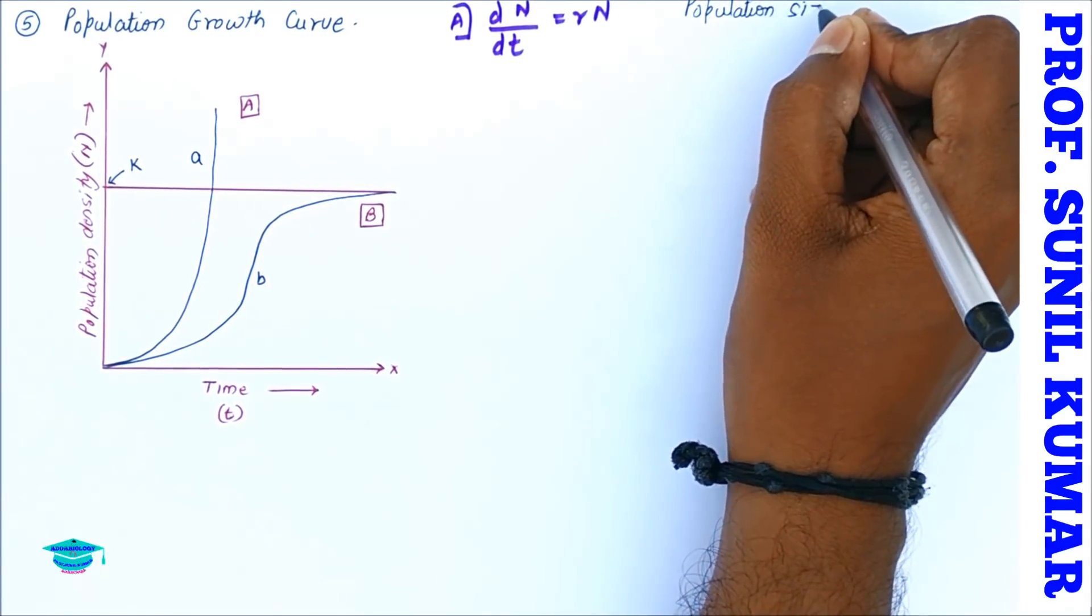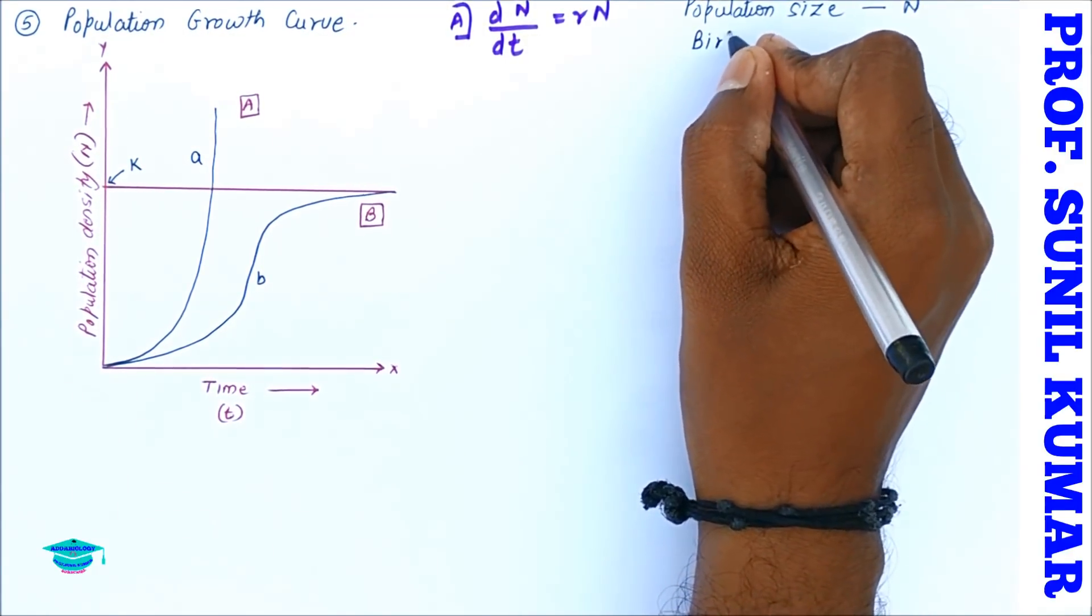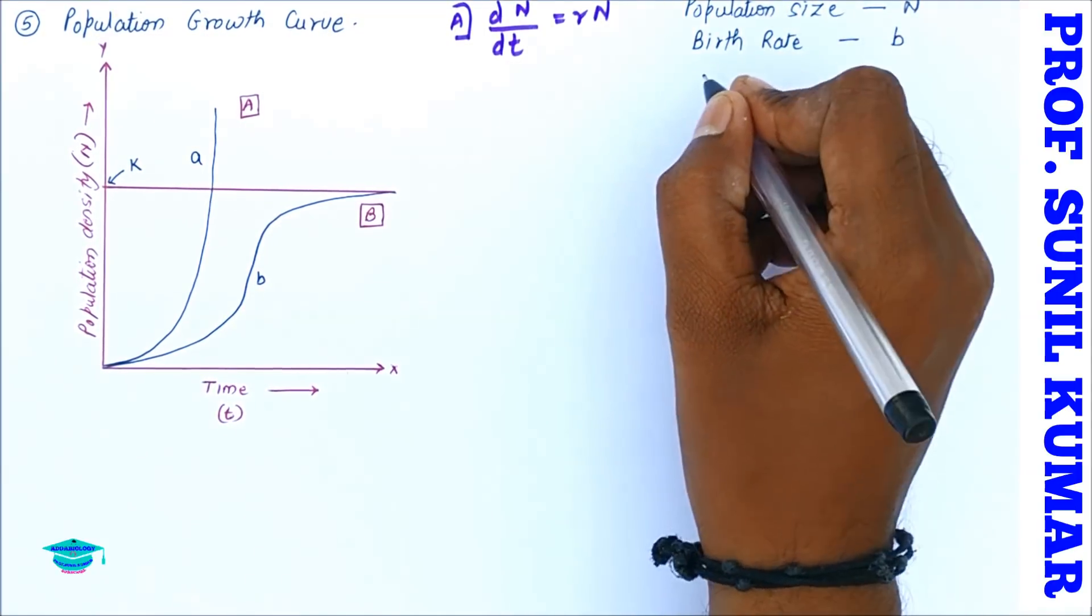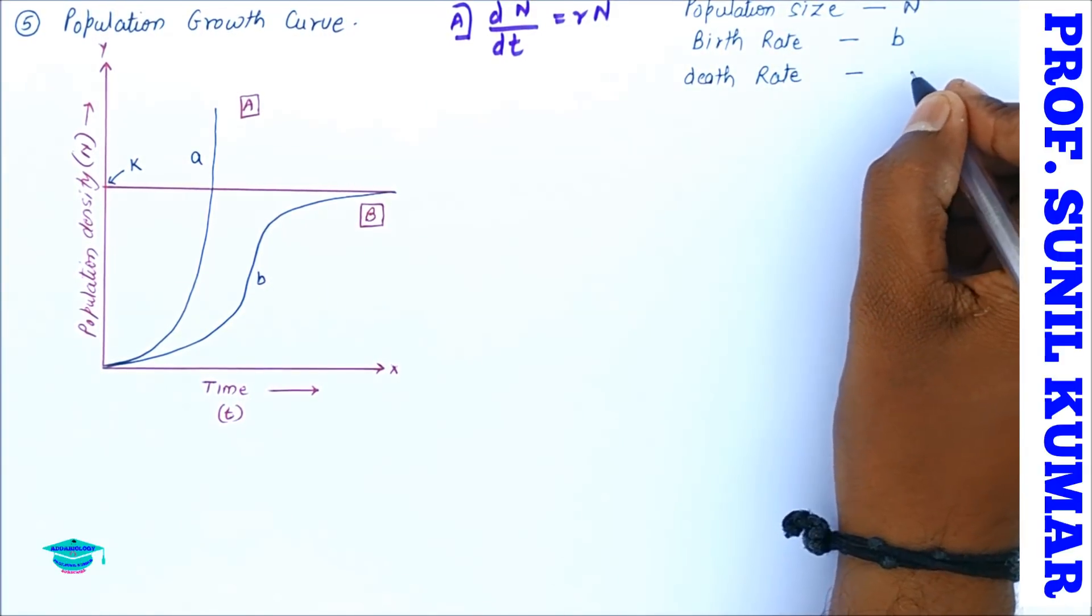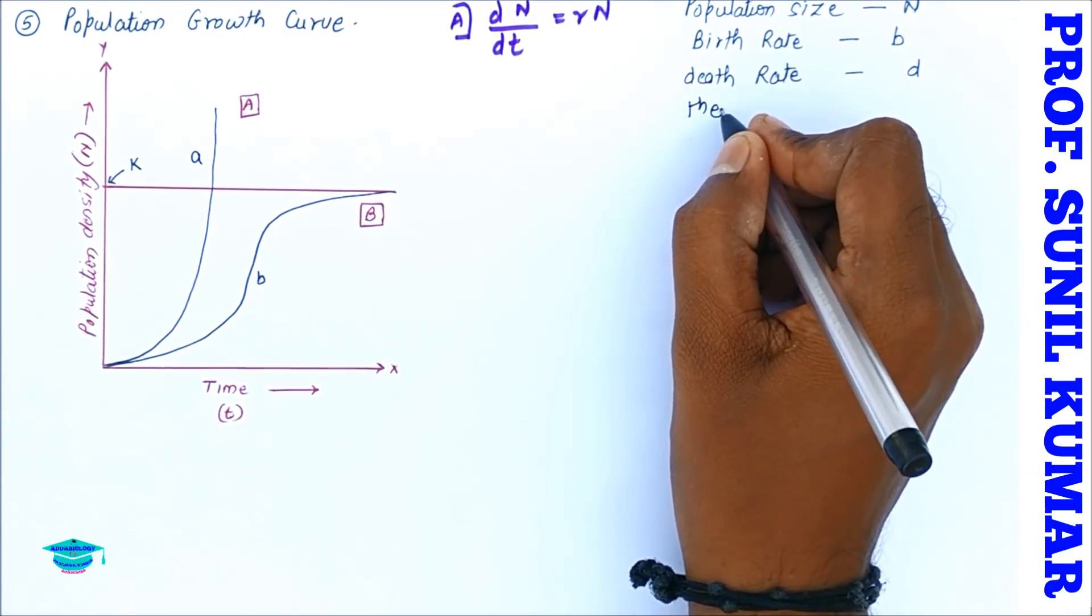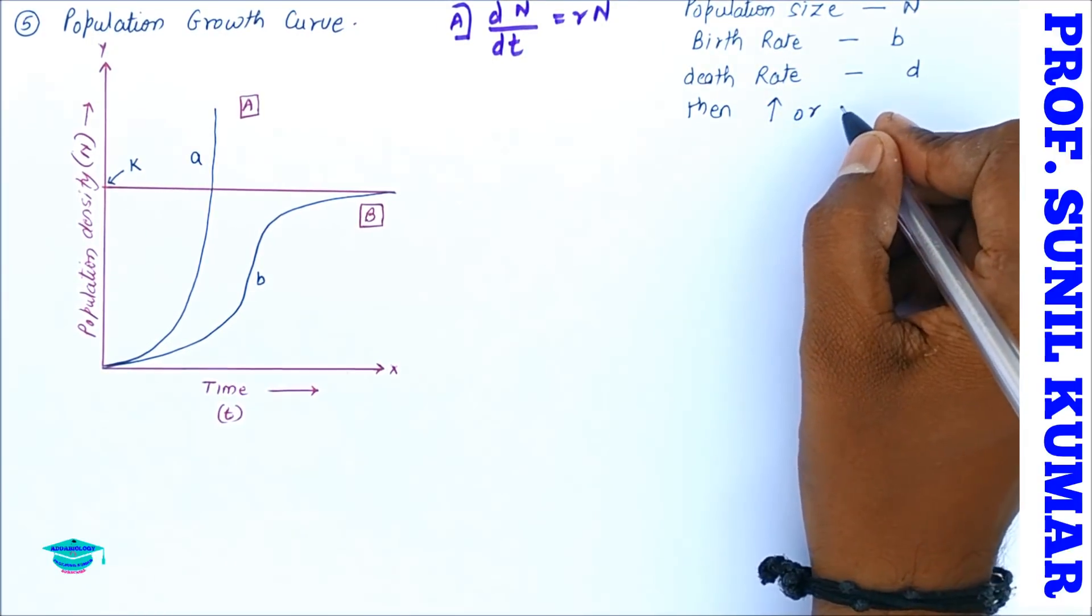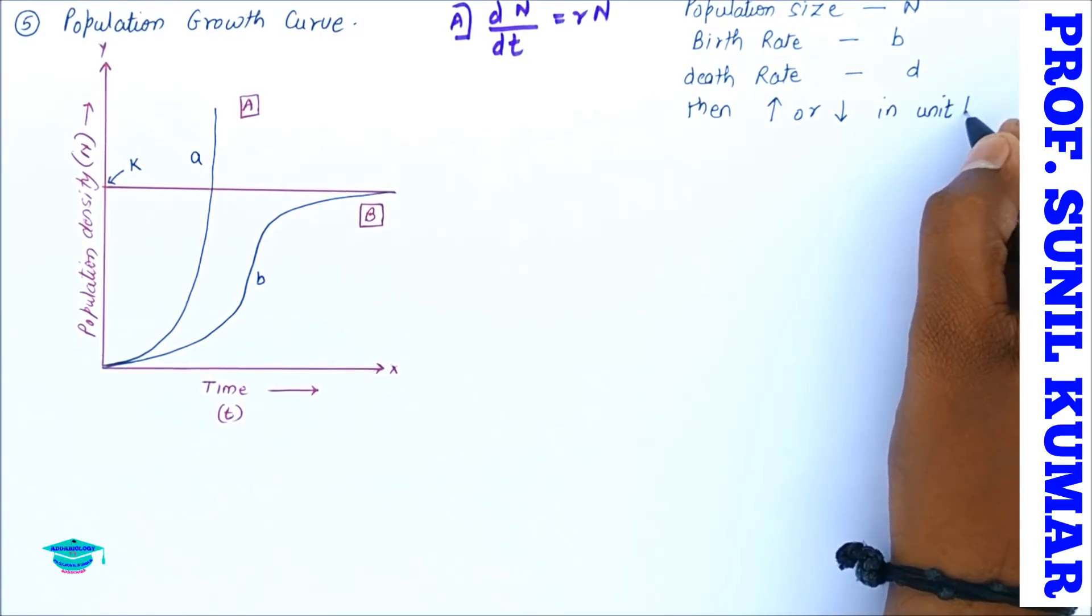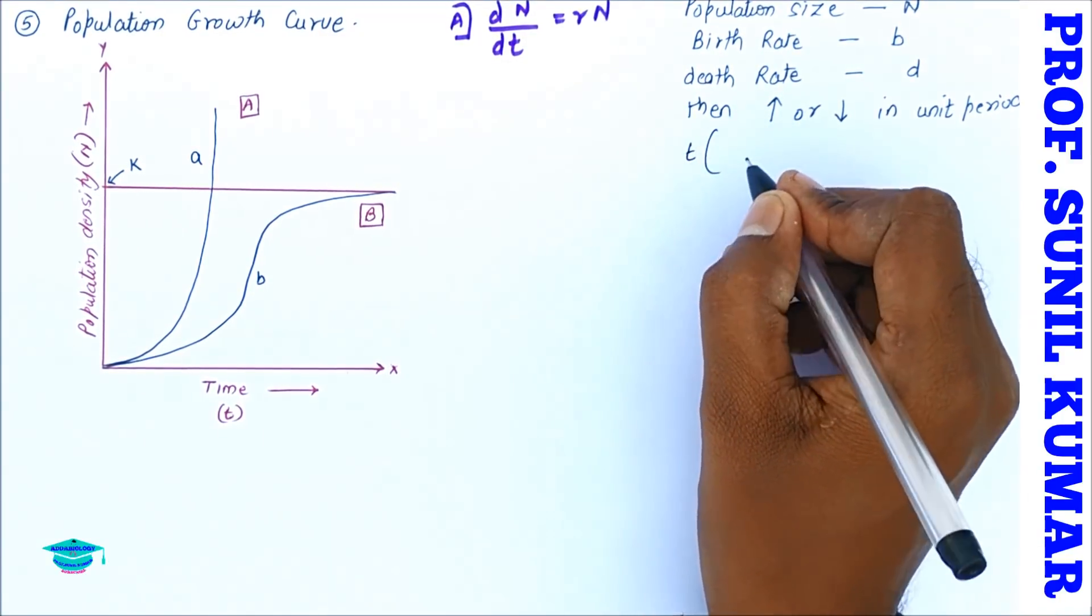Here, the population size is given by N, the birth rate of the population is given by b, the death rate of the population is given by d. So if I want to know whether there is increase or decrease in unit period, that is time t, how can we calculate? We can say that dN/dt is given by...